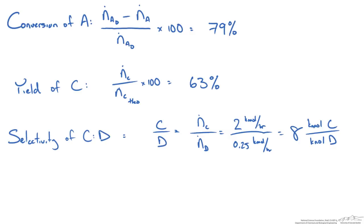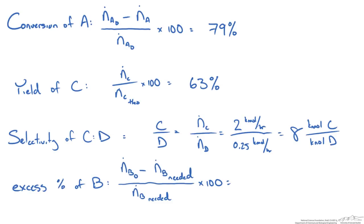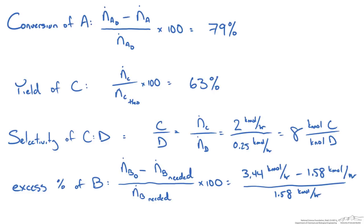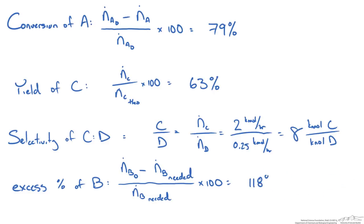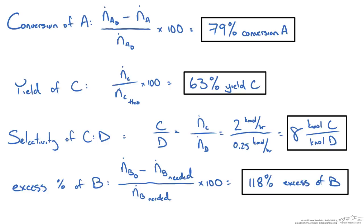The last quantity is the percent excess of B fed to the reactor. We take what is fed, subtract the amount theoretically needed based on how much A entered, and divide by how much is needed. We had 3.44 kmol per hour of B enter, but only needed 1.58 kmol per hour. Dividing the difference by 1.58 and multiplying by 100 gives a 118% excess of B fed to the system. These are the four answers to box. Hopefully that gives you an idea of working with two reactions and doing material balances.